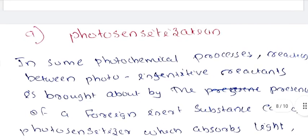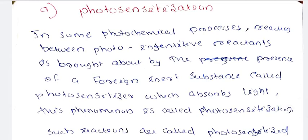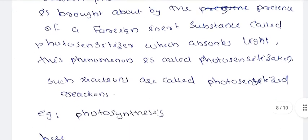We are talking about photosensitization. In some photochemical reactions, a reaction involving photoinsensitive reactants is brought about by the presence of a foreign inert substance called a photosensitizer. By adding a photosensitizer, photochemical reactions can be carried out even with photoinsensitive reactants. This process is called the photosensitization reaction.